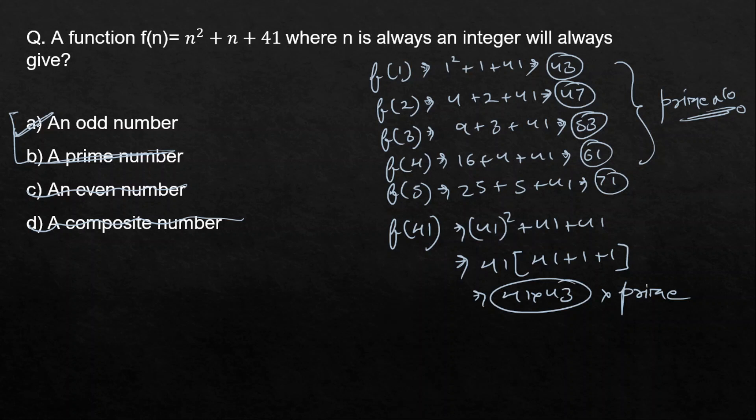There is no algebraic function in the universe that can always generate a prime number — prime numbers are randomly distributed. If anyone could find such a function, it would be a major breakthrough in the world of mathematics. This is why prizes like those at IIT are offered for finding such results.